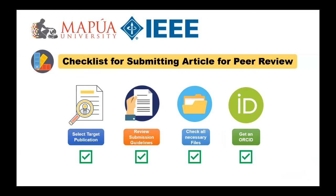Number two: review the submission guidelines for your target publication to ensure your article meets all the requirements. Number three: agree on who will serve as the article's corresponding author if your article has multiple authors — and indicate each author's role in the letter to the editor. Number four: check that you have all the files needed. Number five: get an Open Researcher and Contributor ID, or ORCID, which is vital when submitting to a journal.